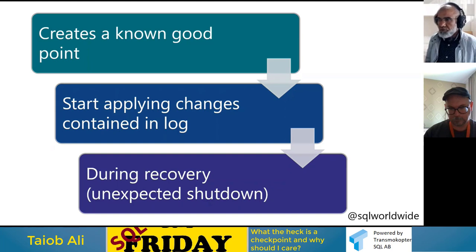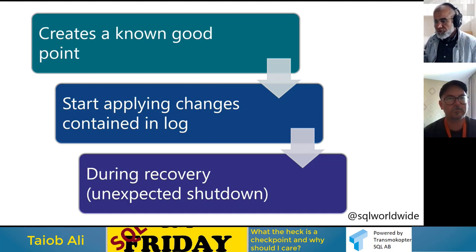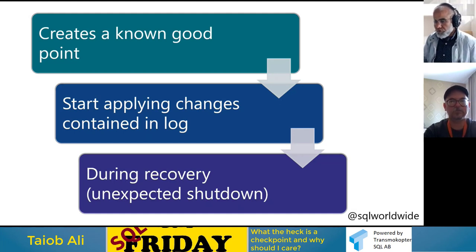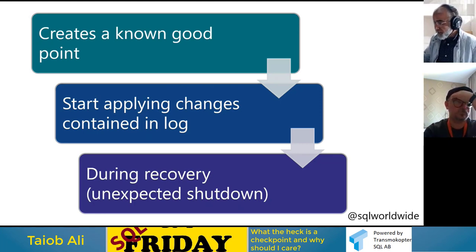A plain-English definition: a checkpoint creates a point — specifically a log sequence number — so that if there is a crash and SQL Server goes down, when it comes back up it knows from that point forward what changes to look at in the log. It doesn't have to go beyond that marker. Transaction logs are circular — a fixed length that keeps overwriting — so you need to know where to start crash recovery.